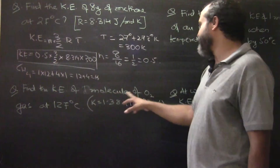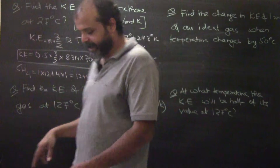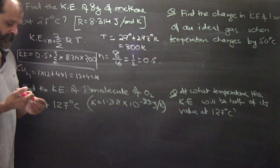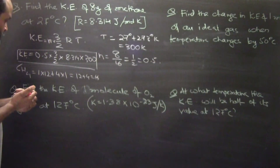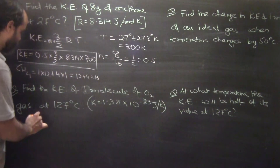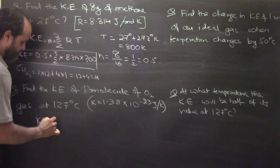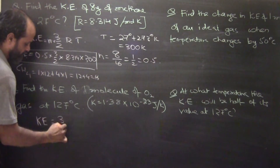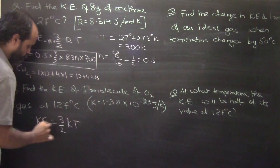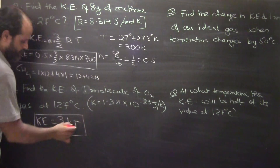Alright, I am just letting you know how to work these sums out. You will have to get the final answer by yourself. So, find the kinetic energy of one molecule of oxygen at 127 degrees centigrade. Here, the Boltzmann's constant is given. So we know kinetic energy is equal to 3 by 2 KT, that is Boltzmann's constant.